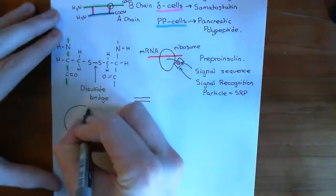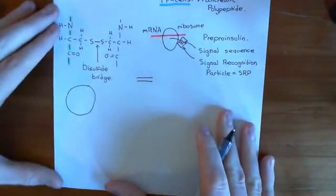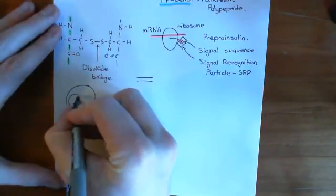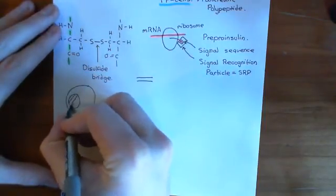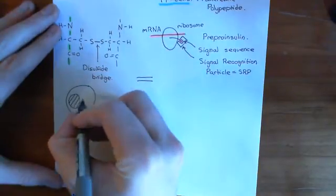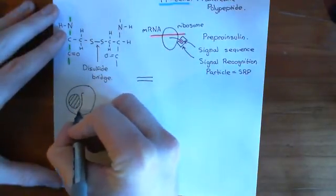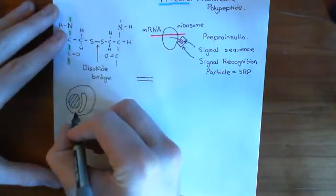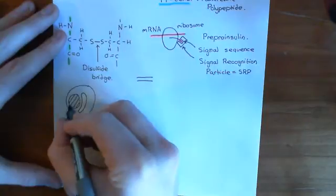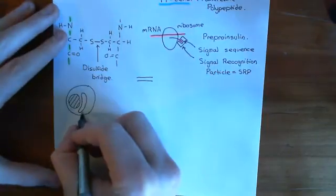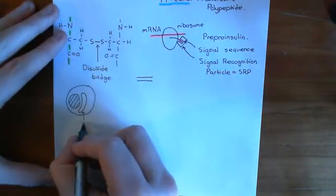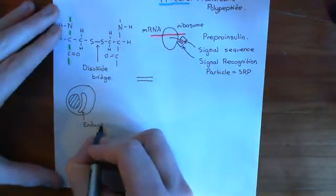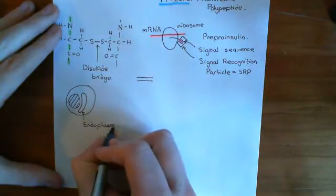If this is a cell, you have certain important intracellular organelles. Probably the most famous is the nucleus, where the DNA is kept. Another really important intracellular organelle is the endoplasmic reticulum, which is membrane-bound just like the nucleus. Both have a membrane around them, and this membrane is a lipid bilayer, just like the membrane that surrounds the cell.